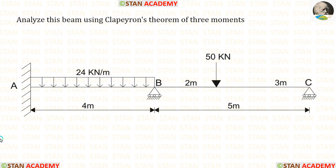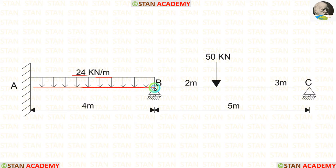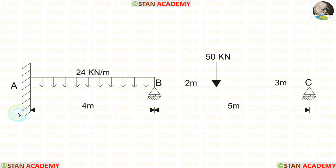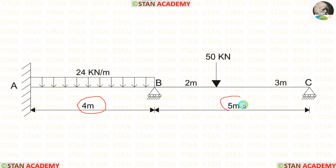Hello everyone. Today we are going to analyze this beam using Clapeyron's theorem of three moments. In this beam there are two spans: span AB and span BC. In span AB, there is a uniformly distributed load of 24 kN per meter acting for the full span. In span BC, there is a point load of 50 kN acting at 2 meters from point B. At point A there is a fixed support, and at points B and C there are roller supports. Span AB is 4 meters long and span BC is 5 meters long.